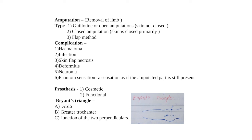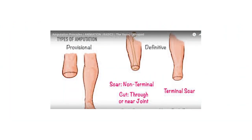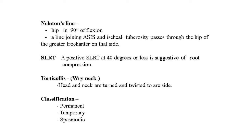Prostheses are of two types: cosmetic and functional, used after amputation. Bryant's triangle: point A is the ASIS, point B is the greater trochanter, and point C is the junction of the two perpendicular lines from A and B. An image shows disarticulation of the knee joint, a type of amputation. Nelaton's line: with the hip in 90 degrees of flexion, a line joining the ASIS and the ischial tuberosity passes through the tip of the greater trochanter. A positive SLRT at 40 degrees or less suggests nerve root compression.